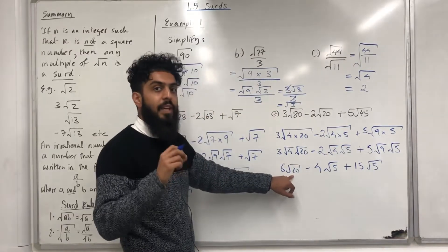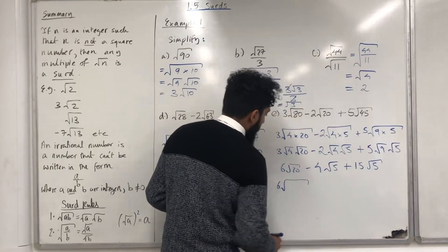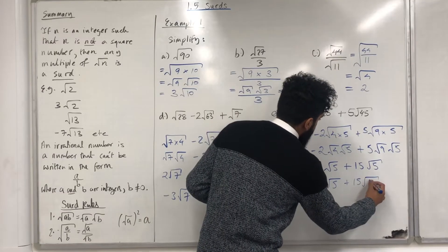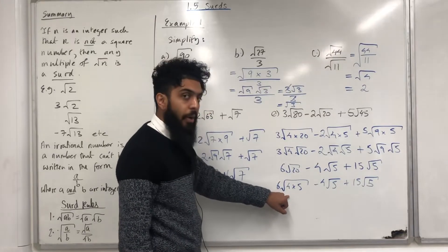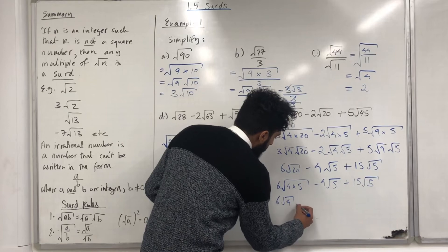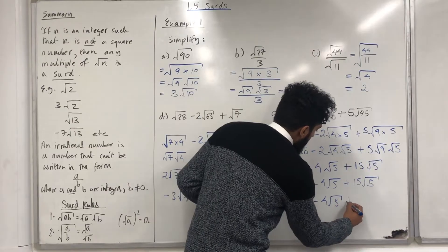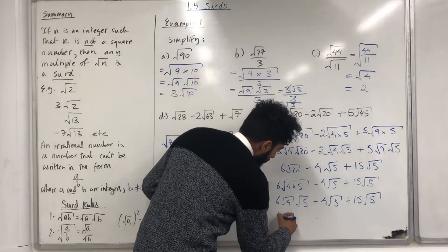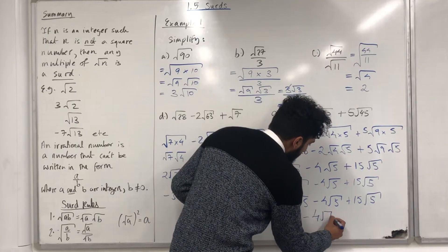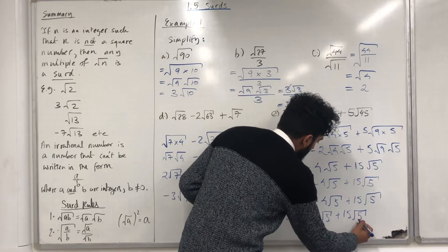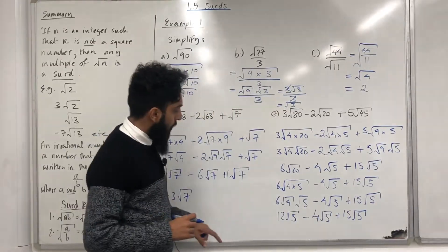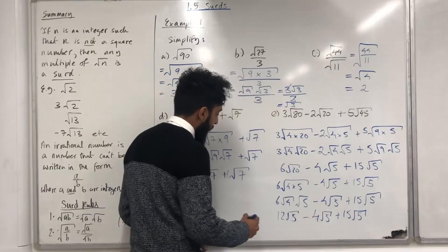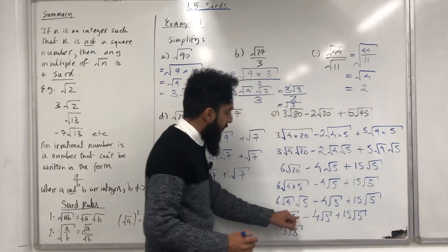20 is not a prime number, so we can simplify square root 20 further. 20 can be split into the product 4 times 5. So we now have 6 square root of 4 times 5, minus 4 square root 5, plus 15 square root 5. Splitting square root of 4 times 5 into square root 4 multiplied by square root 5: square root of 4 is 2, and 2 times 6 is 12, giving 12 square root 5. So we have 12 square root 5 minus 4 square root 5 plus 15 square root 5. These three terms are like terms — each proportional to square root 5. Combining: 12 minus 4 is 8, and 8 plus 15 is 23. The final answer is 23 square root 5, which is in its simplest form.